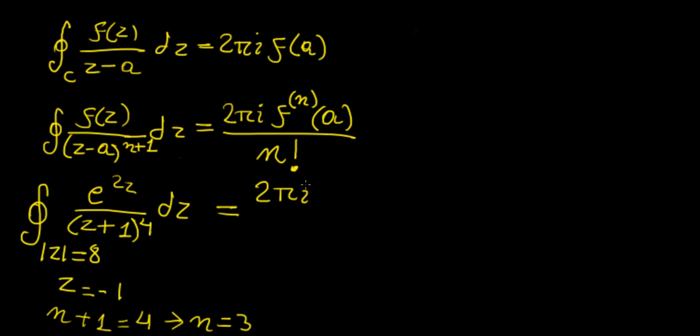So if we plug those values into this formula, we're going to get 2πi, f^(3), so the third derivative of this function evaluated at point minus 1, and then n factorial is going to be 3 factorial, which is 6.